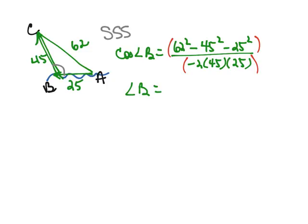So we're going to enter on our calculator: second cosine, parentheses, 62 squared minus 45 squared minus 25 squared, divided by negative 2 times 45 times 25, close our parentheses.